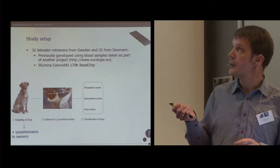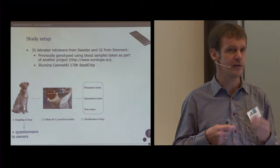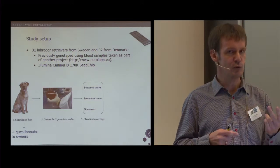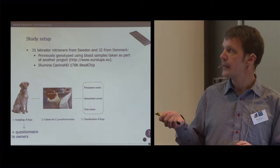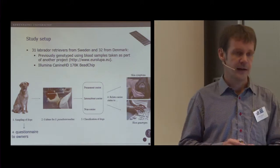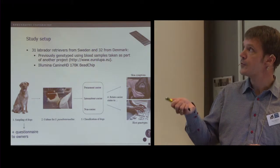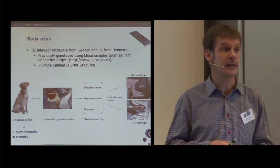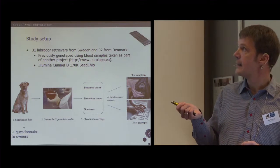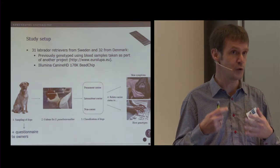The owners sent these swab samples to us in our diagnostic laboratory and we streaked them out on blood agar and we searched for Staphylococcus pseudintermedius. Depending on how many times we found Staphylococcus pseudintermedius from these dogs, we classified them into three categories: either permanent carriers, where the dog would be positive on all three sampling occasions, or intermittent carriers, where they would be positive on one or two of the three sampling occasions, or non-carriers, where we didn't find it in any case. Afterwards, we related these groups to whether the dogs had any current or previous skin infections or symptoms of skin disease, and we also related the carrier status to the host genotype.